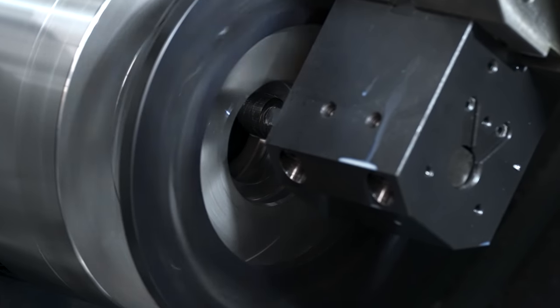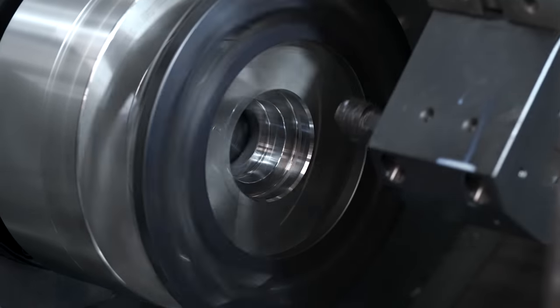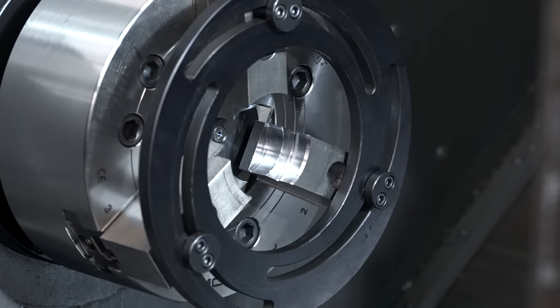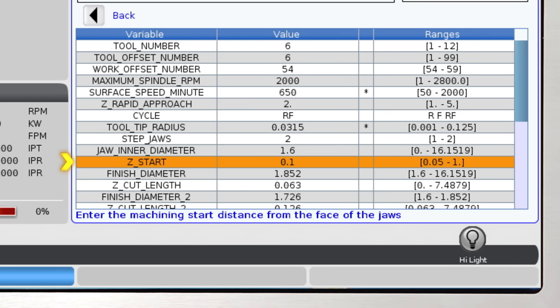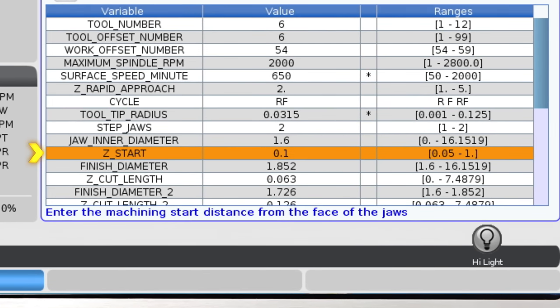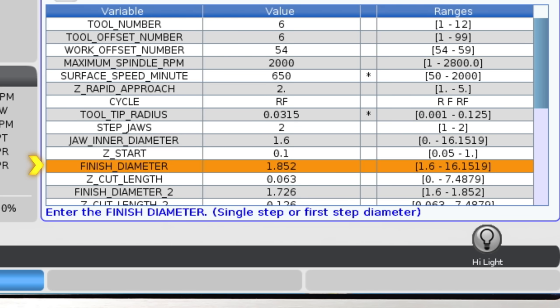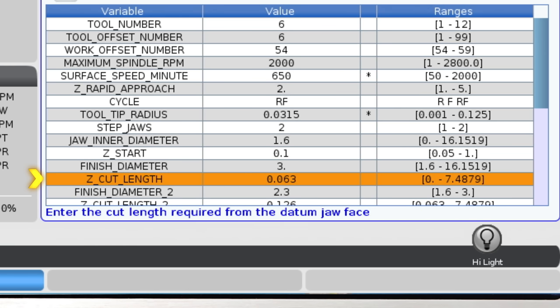If the finish cycle was selected, this would be the diameter the toolpath ends at after cutting the jaw face. Now that we have set the rapid Z and the jaw inner diameter values, we have effectively navigated around the jaw ring safely and can enter the Z start value away from the datum face of the jaw. This is where we'll start the cutting cycle. I'll leave it at 100 thou. Then the finish diameter we need to machine is the diameter of the raw stock. So I'll enter that measured diameter here. And I'll enter the depth that I'm going to clamp on here.